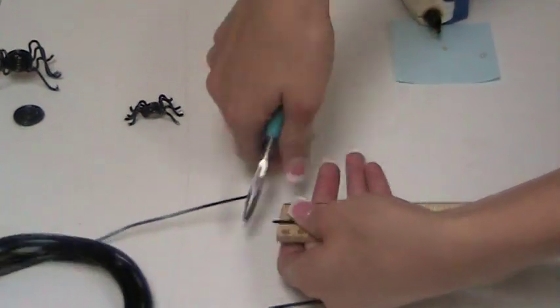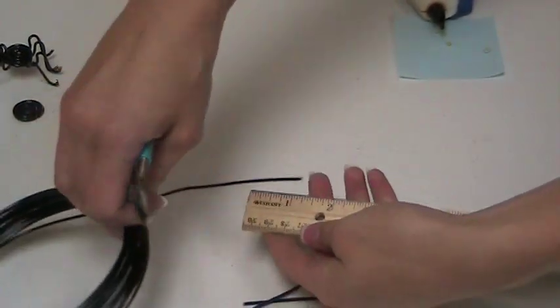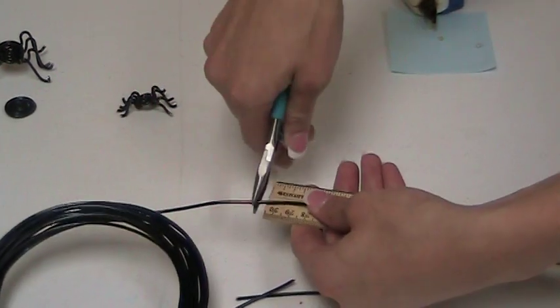I found that the ruler with the screw down the center works really well for holding the wire in place.